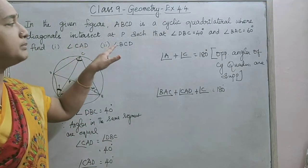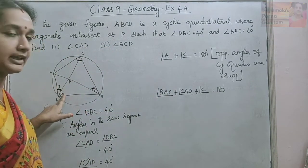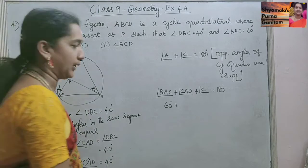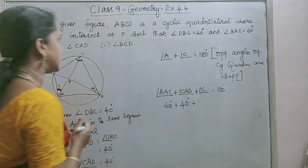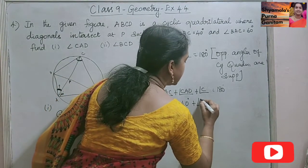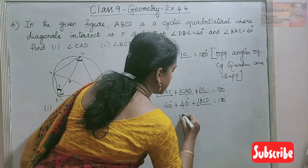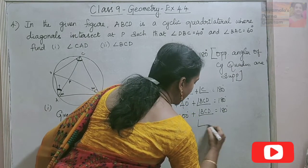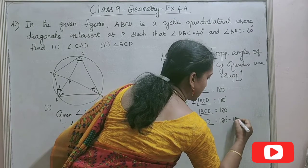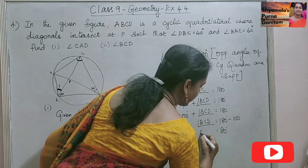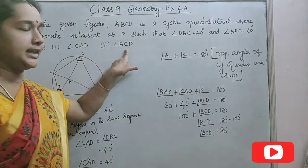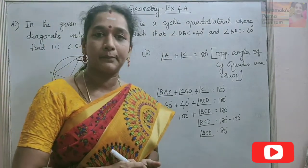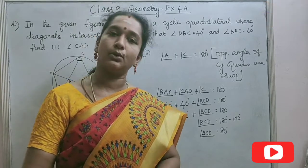So 60 degrees plus 40 degrees plus angle BCD equals 180 degrees. That gives 100 plus angle BCD equals 180 degrees, so angle BCD equals 80 degrees. Both angles were found using cyclic quadrilateral properties. Thank you.